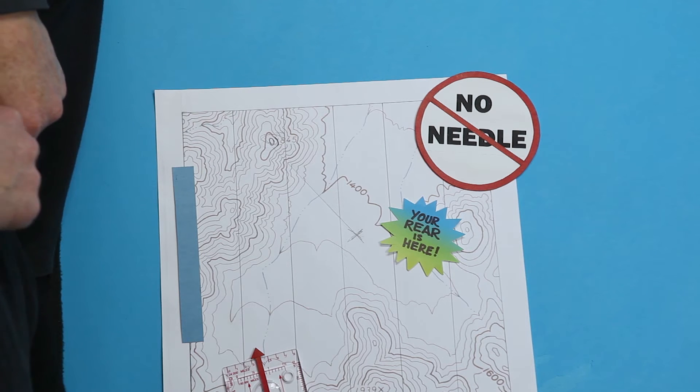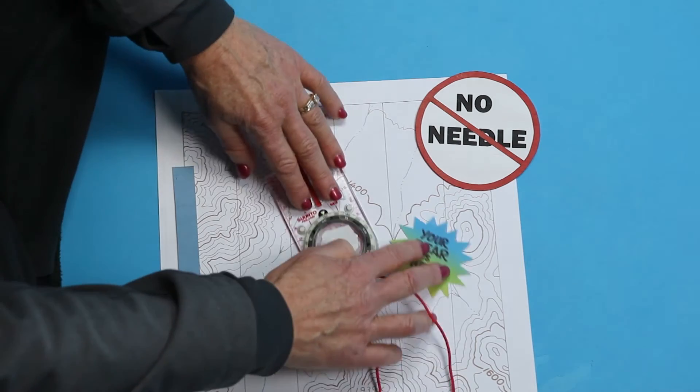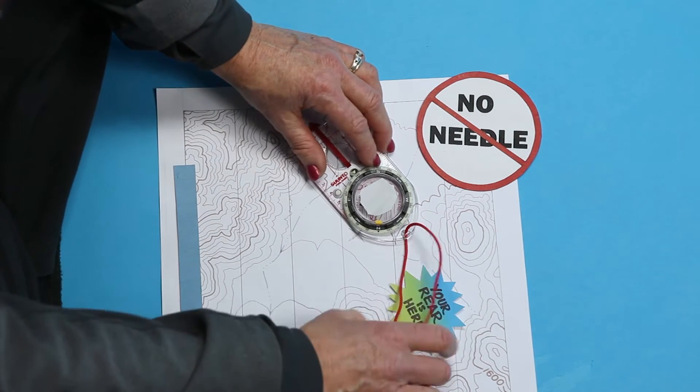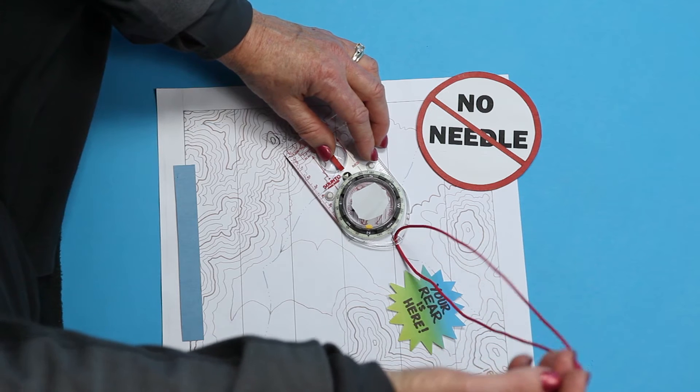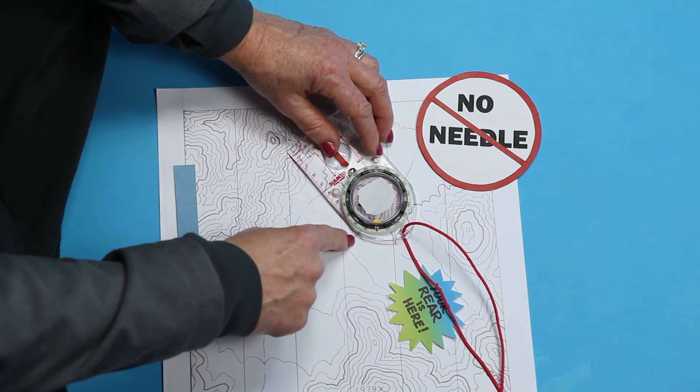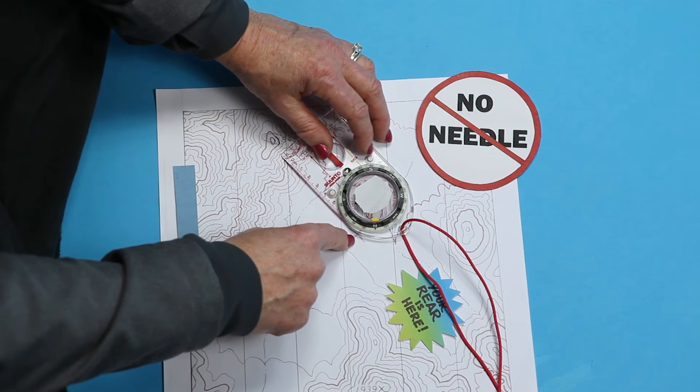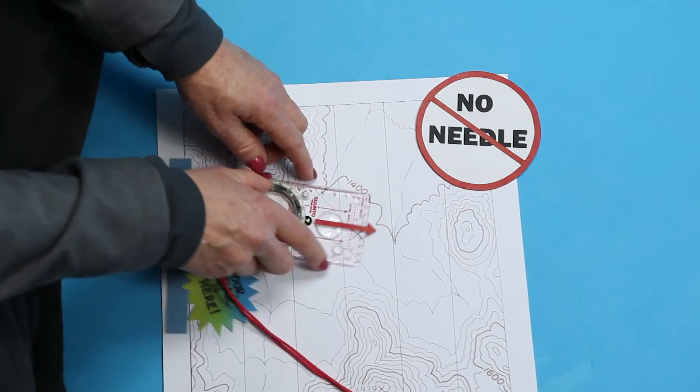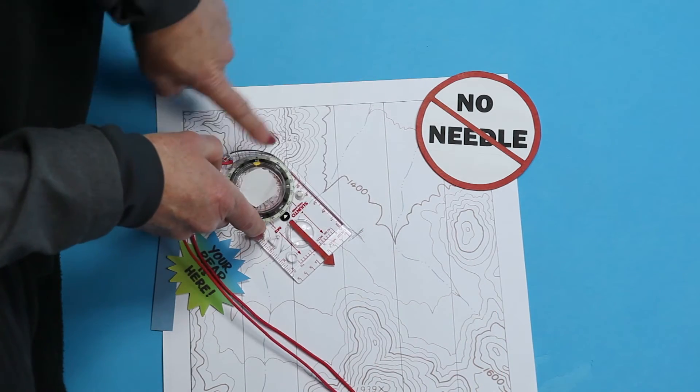Put either side of the base plate along that line. The rear of the compass, the part that the lanyard holds closest to you, goes where your rear is on the map at the X. So if your rear isn't up on that mountaintop, the rear of the compass shouldn't be there either.